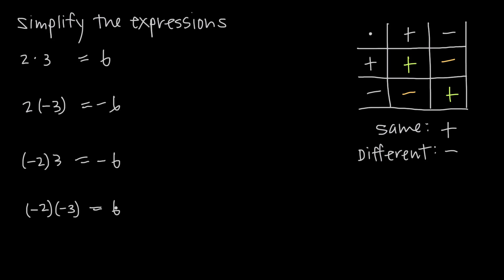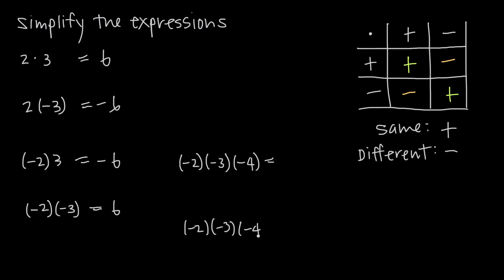Keep in mind that this logic only applies when you're multiplying together just 2 signed numbers. If you're multiplying together more than 2 numbers — say 3 or 4 numbers — this logic doesn't necessarily hold. For example, if I multiply negative 2 times negative 3 times negative 4, you might say the signs are all the same so the result should be positive — but that's not true.